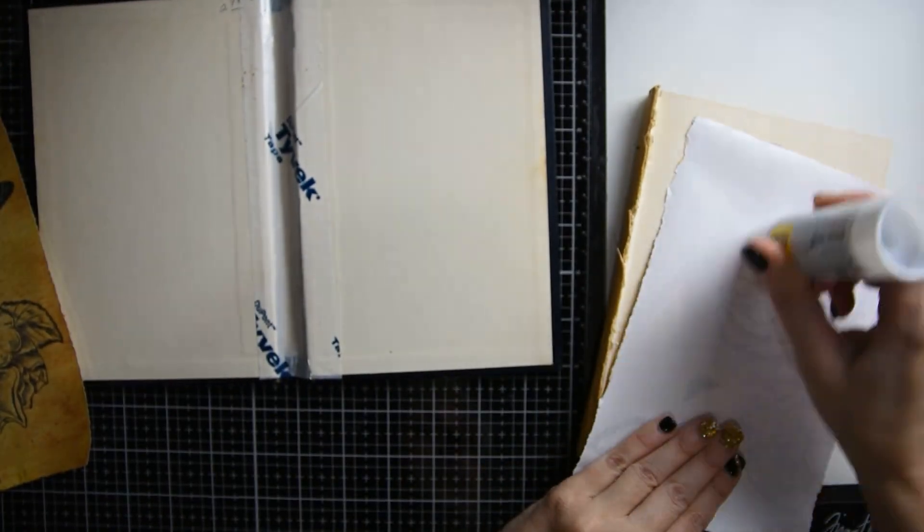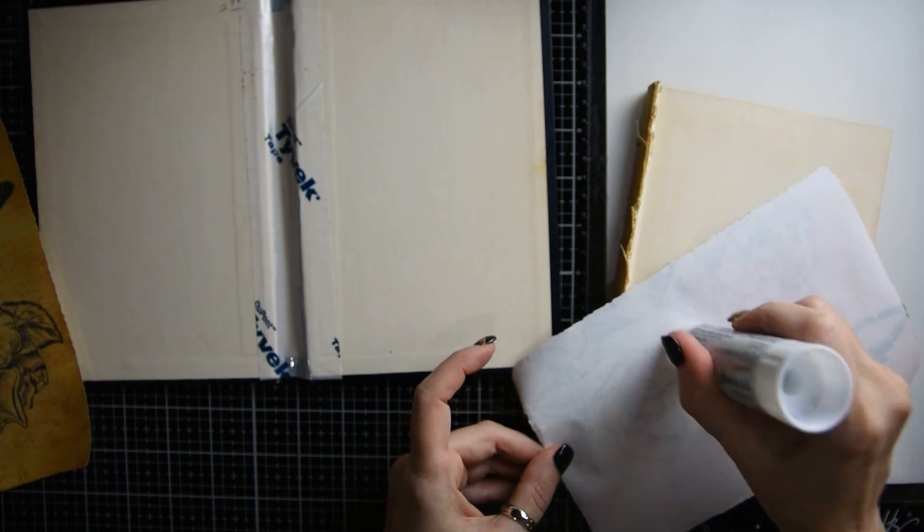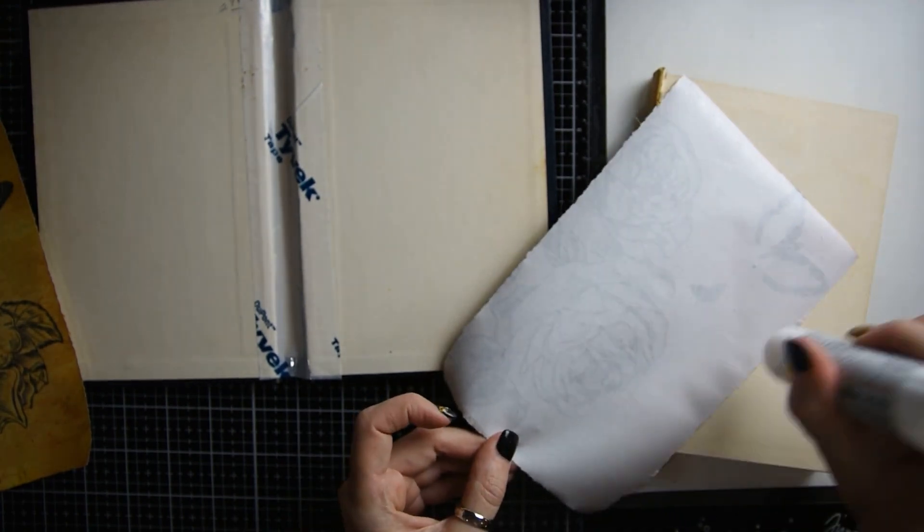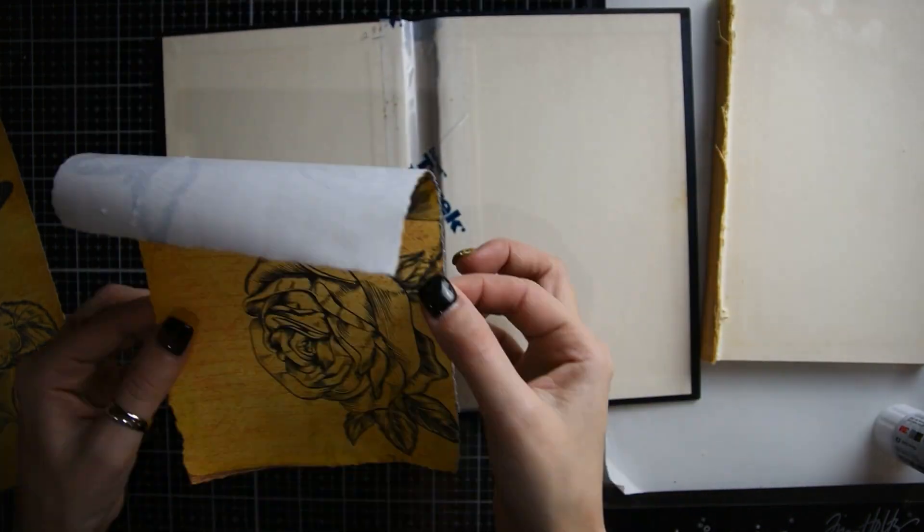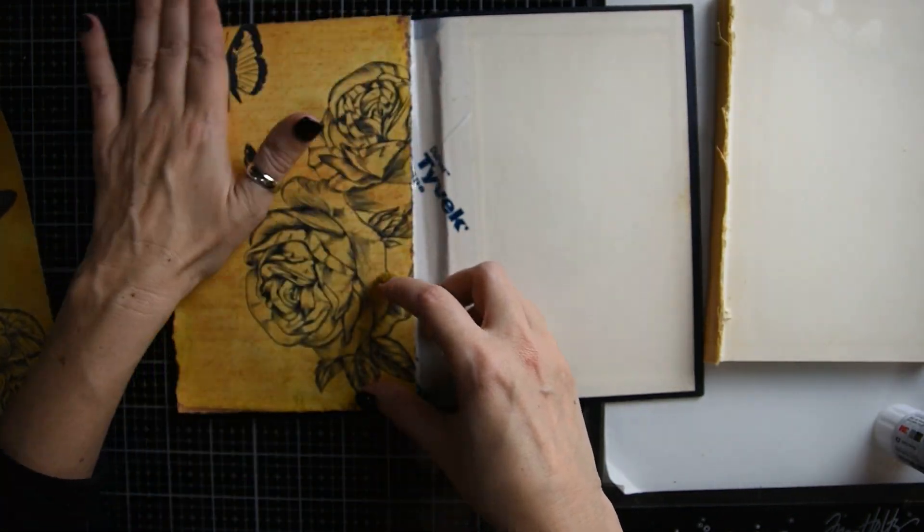And the next step is if you're going to cover the inside covers on the front and the back, this would be the time to go ahead and put your cover paper on. If you don't and you just want to use the regular book that's already there, then you don't have to do this part.